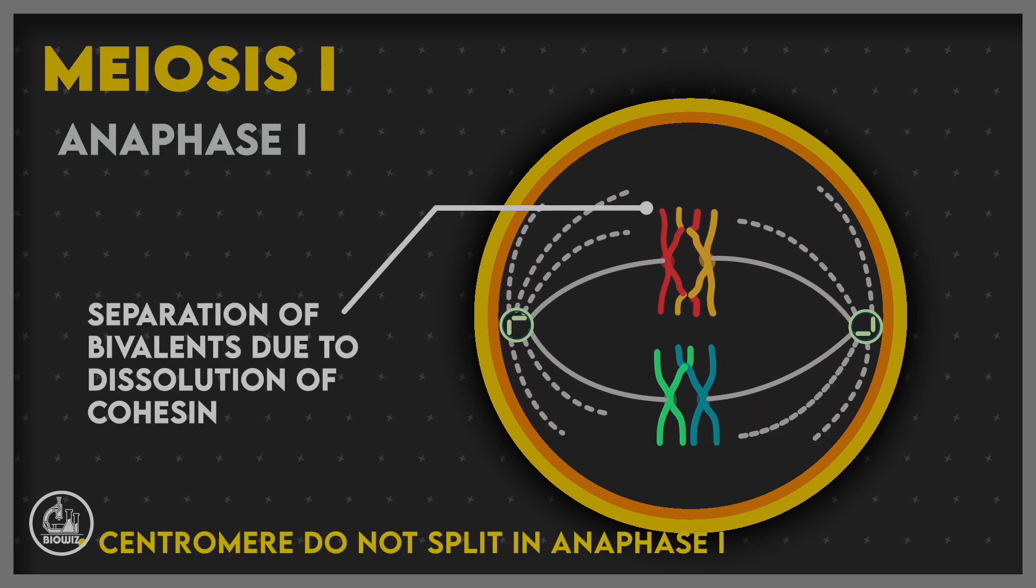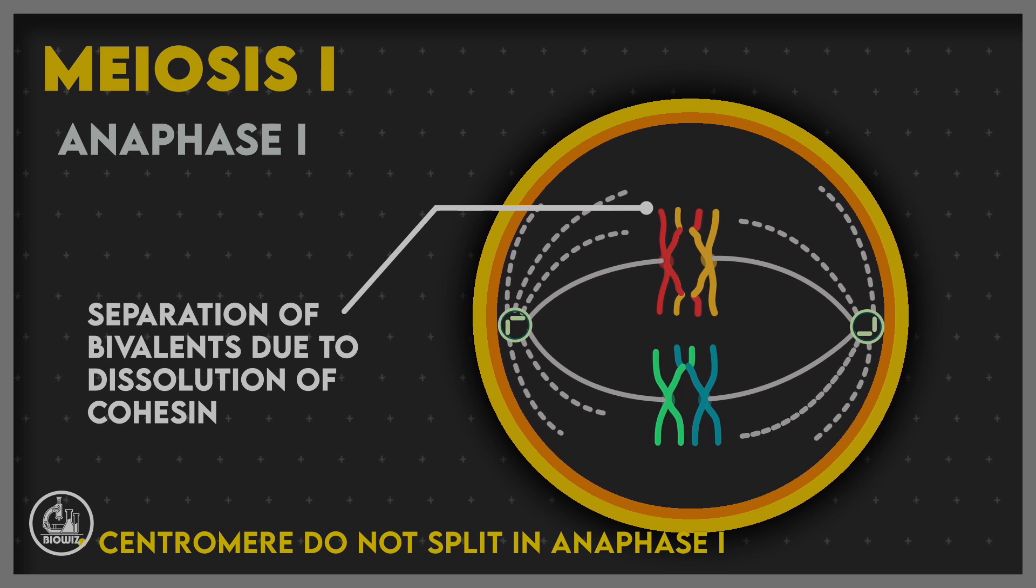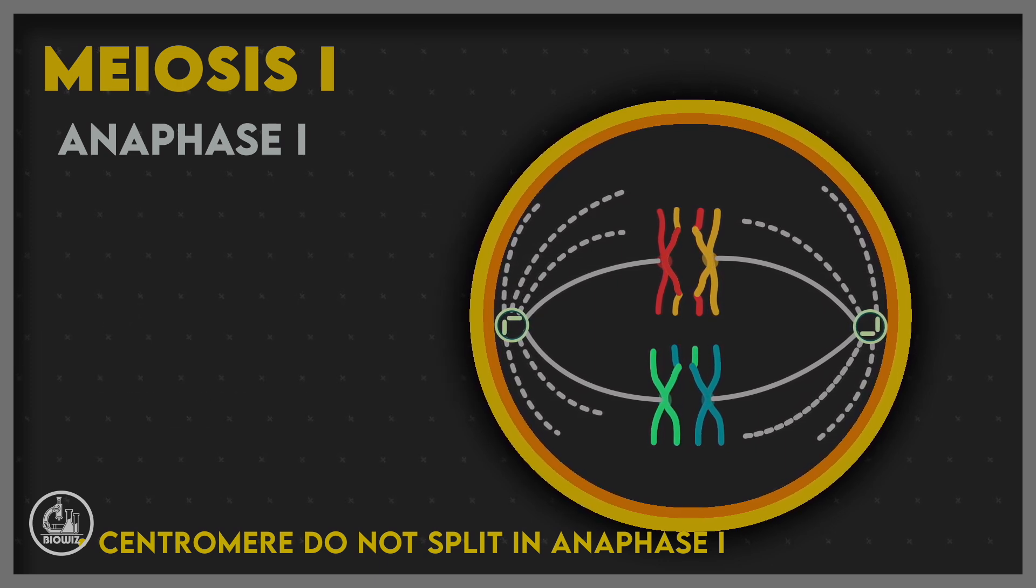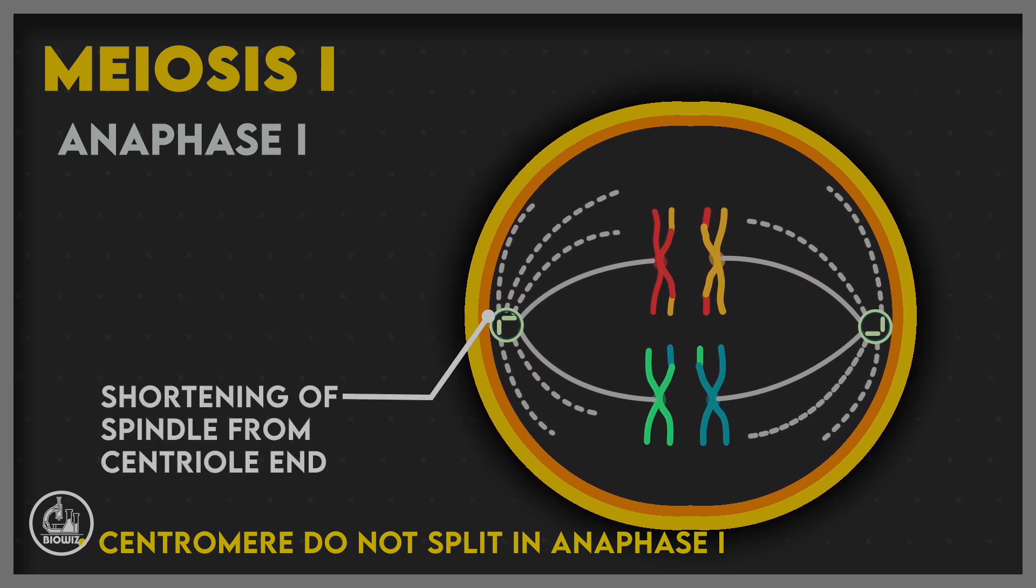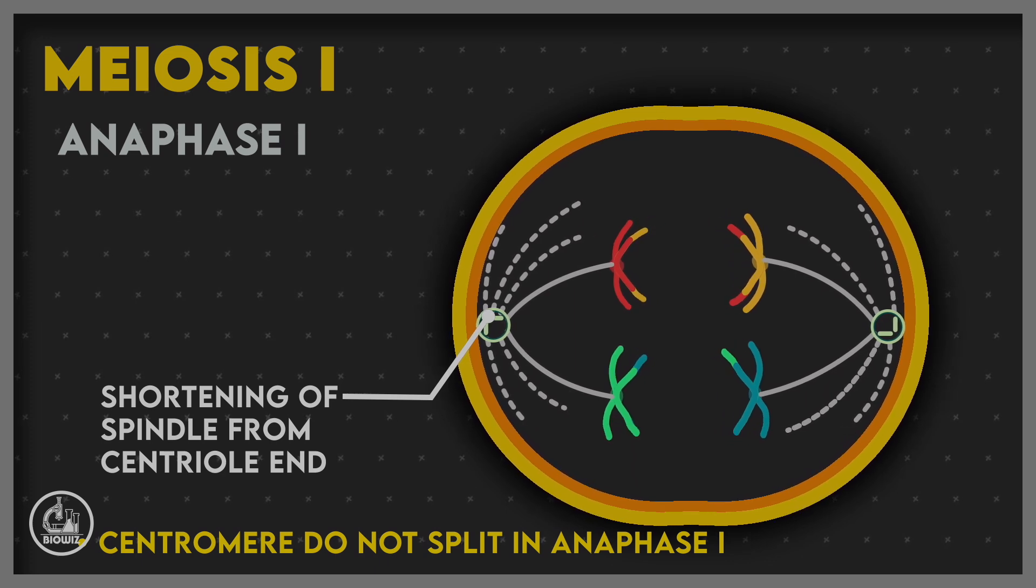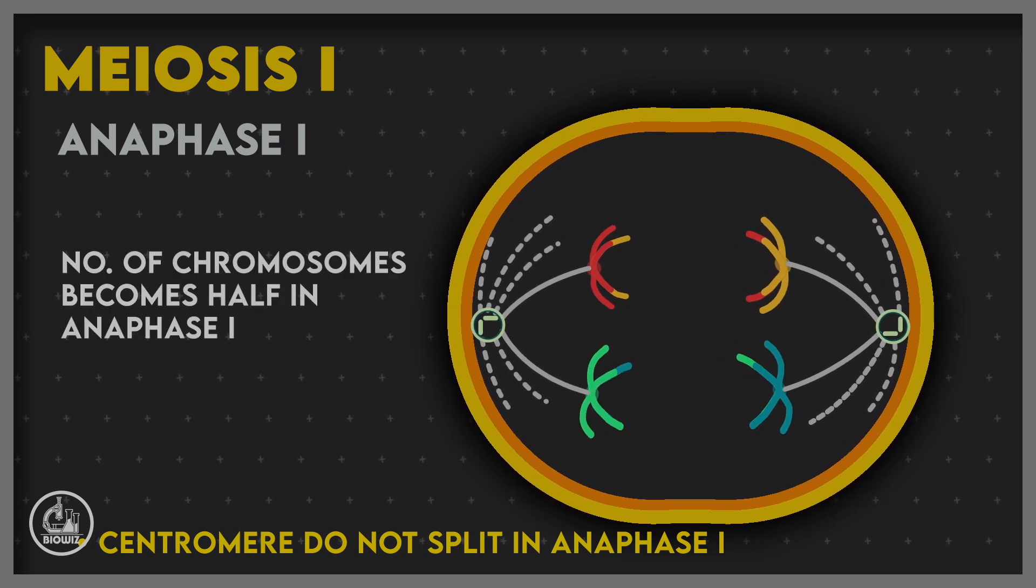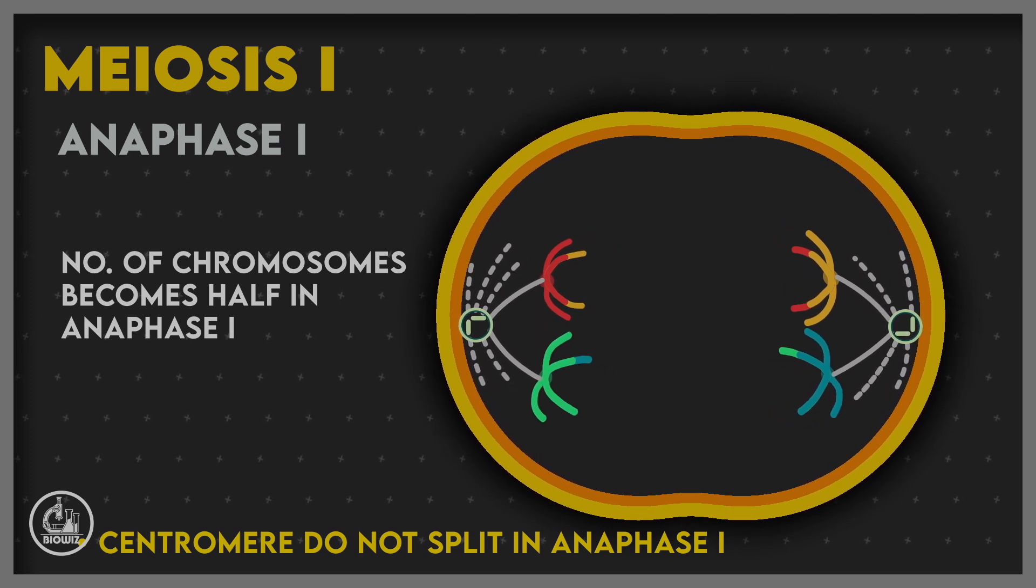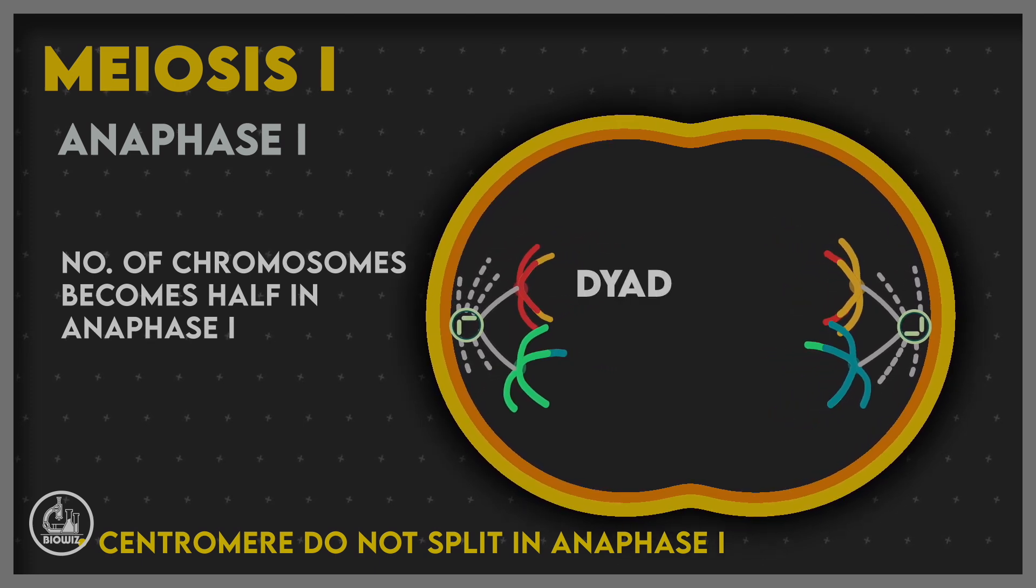This event is followed by anaphase I. The spindle fibers shorten from centriole ends, resulting in separation of homologous chromosomes. Only half the number of chromosomes move towards each pole, resulting in reduction of chromosome number to half. Each chromosome now has two chromatids attached to it and is called a univalent or a dyad.